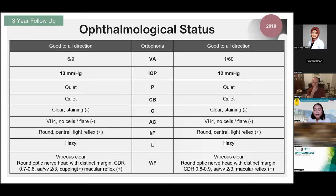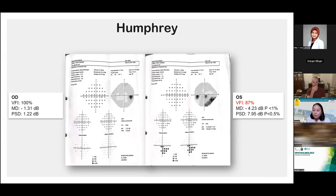Cup-to-disc ratio remained the same, and we performed another yearly ancillary examination to evaluate glaucoma progression. OCT data from 2018 was not found in the medical record, but Humphrey results from 2018 showed similarity with the 2015 examination — still no significant visual field defect in the right eye. The left eye remained relatively the same since the previous year of evaluation and did not show any progression of visual field defect.